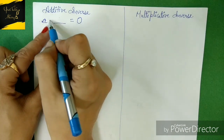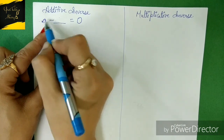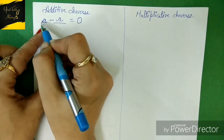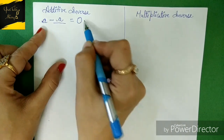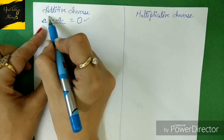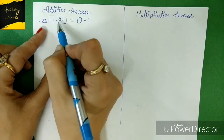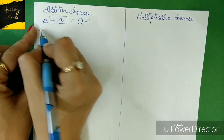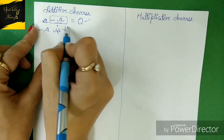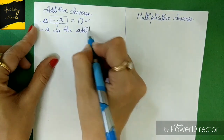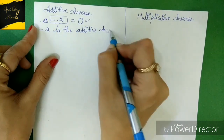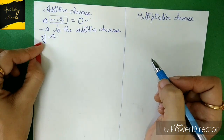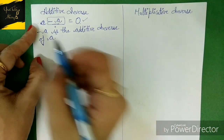We have '+a', and we need to subtract a similar digit, that is '-a'. Once '+a' and '-a' get subtracted from each other, we get the result zero. So we can say that '-a' is the additive inverse of 'a'. Is it clear to all of you?